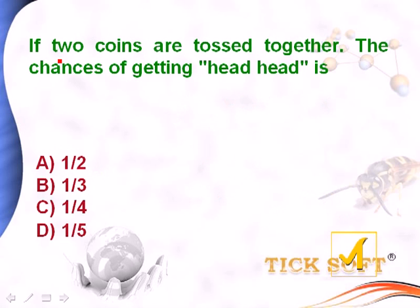If 2 coins are tossed together, the chances of getting head-head is: option a, 1 by 2; option b, 1 by 3; option c, 1 by 4; option d, 1 by 5.